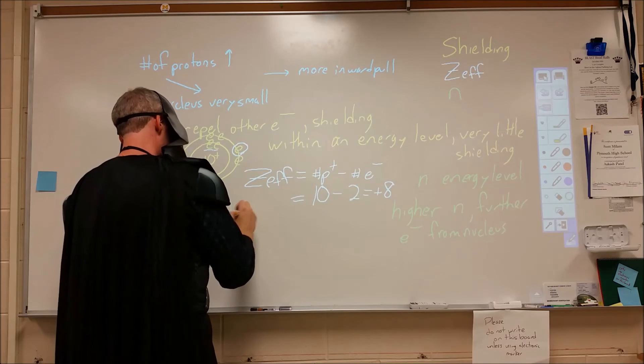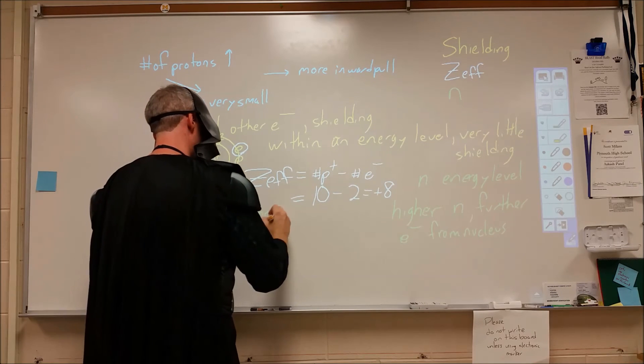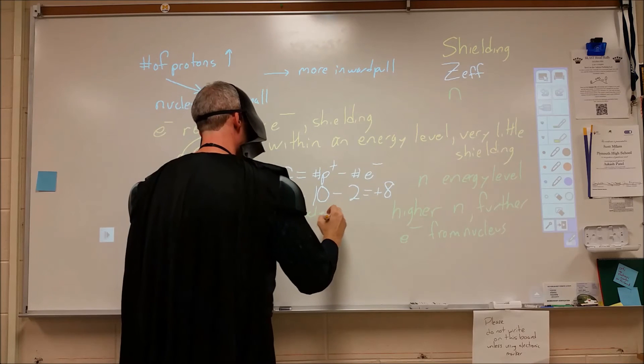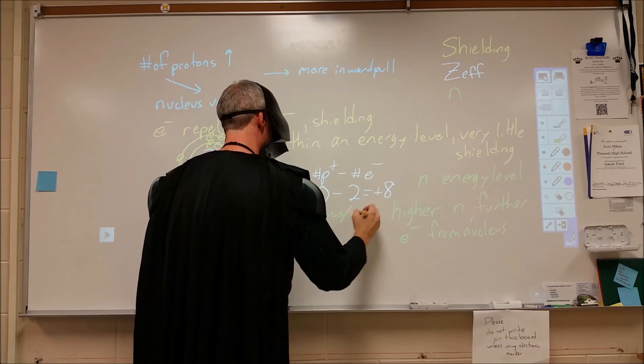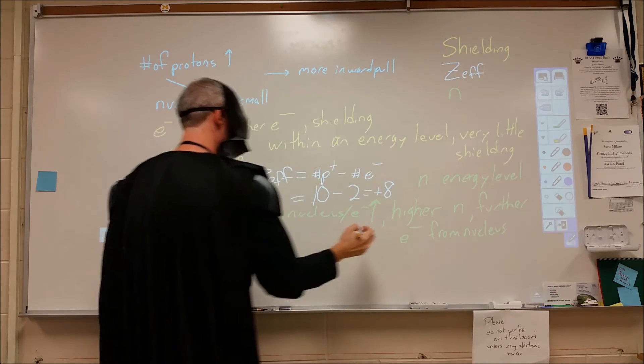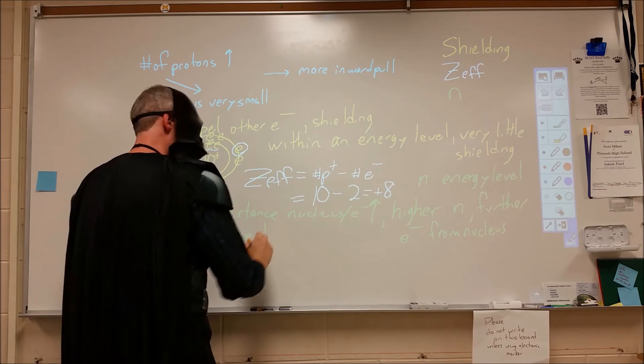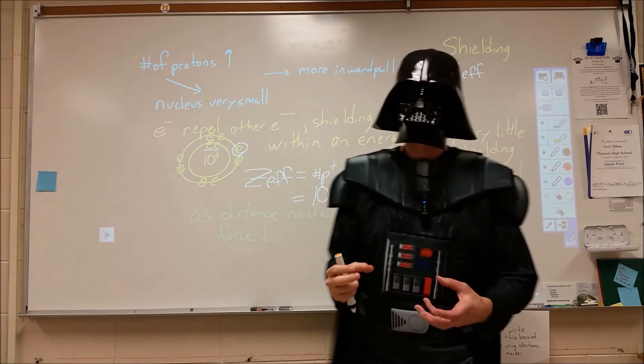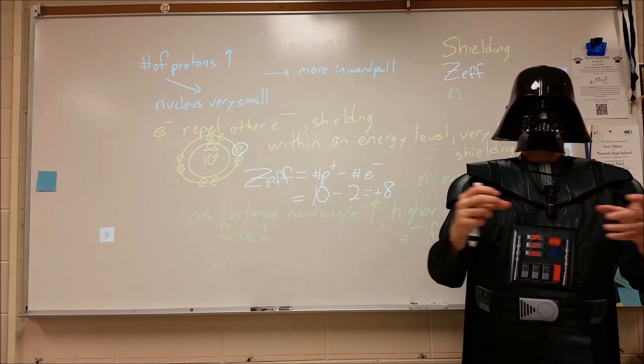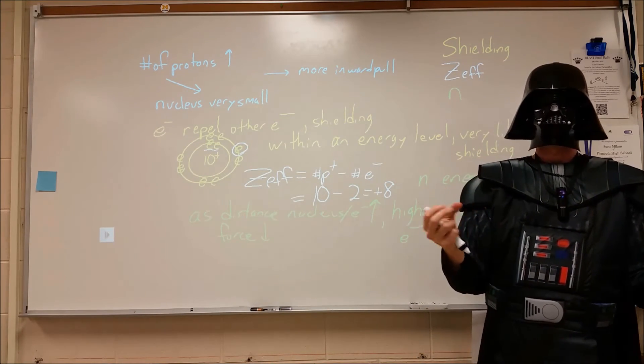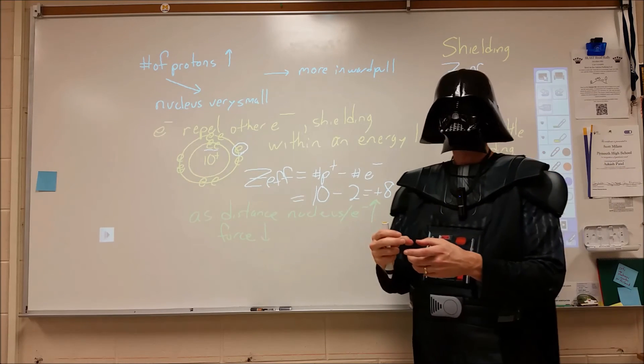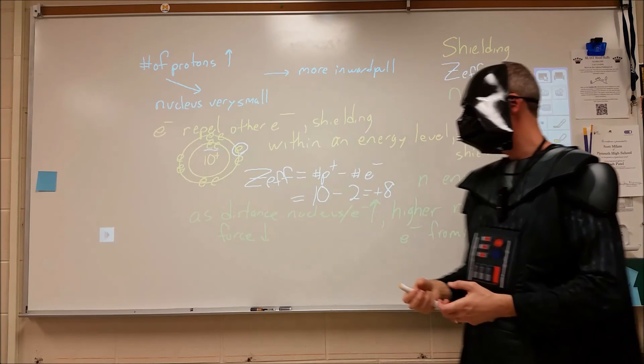So as the distance between the nucleus and the electrons increases, the force of attraction will decrease. Very similar to if you had two magnets, as you move them further apart, the force of attraction between them weakens. If you bring them closer together, the force of attraction becomes larger.